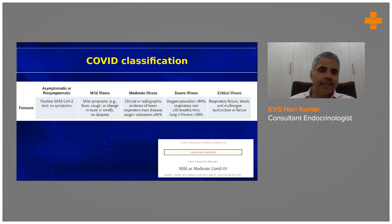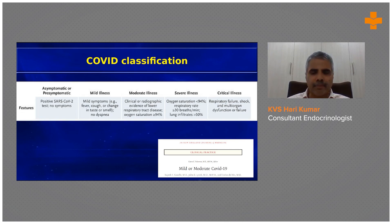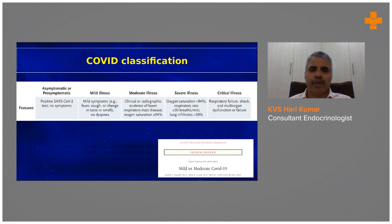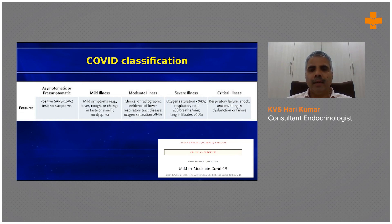COVID also has a spectrum of illness ranging from asymptomatic to critically ill. Mild and asymptomatic patients don't usually come to hospital. Moderate to severe cases present with dropped oxygen saturation and significant rise in inflammatory parameters. Critically ill patients require support for most major organs and have multiple drugs in place, so the severity of illness is important when managing glucose.